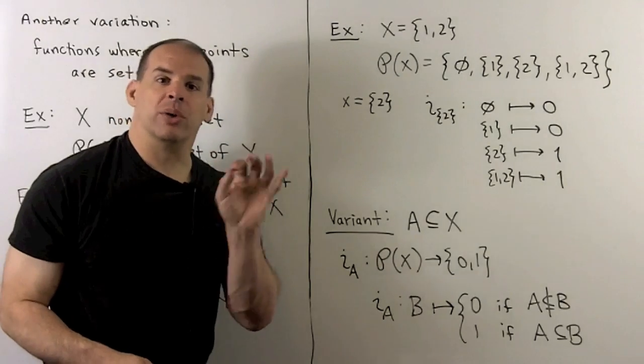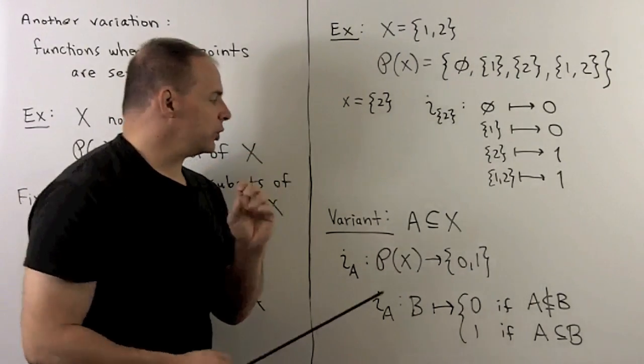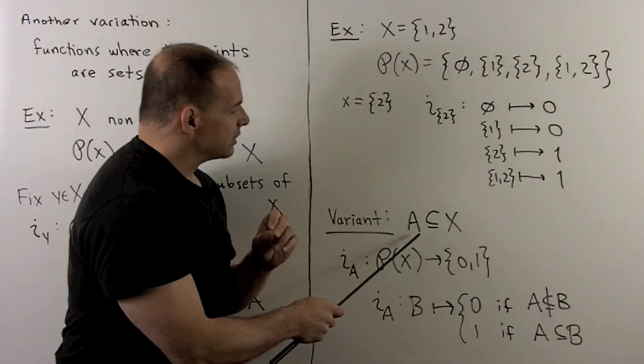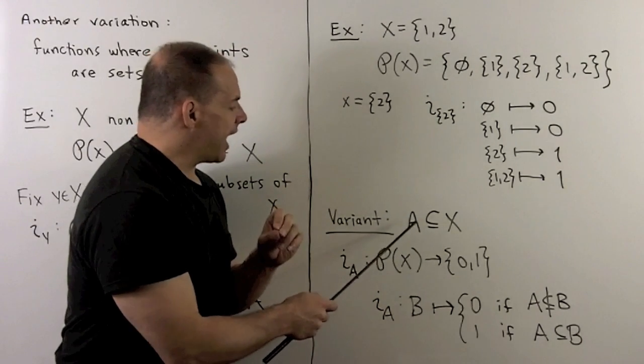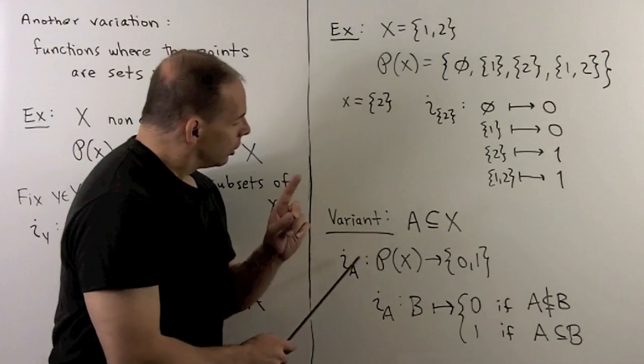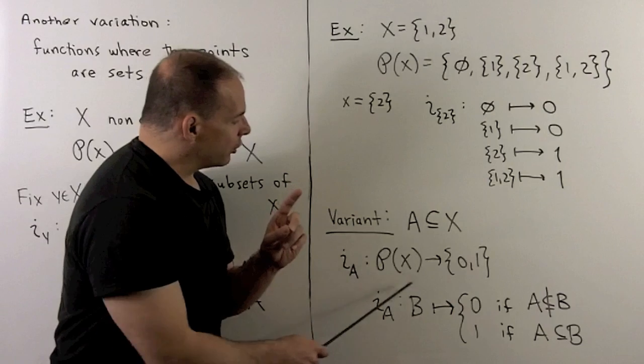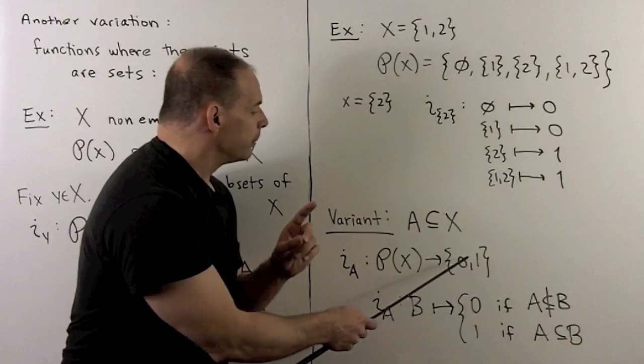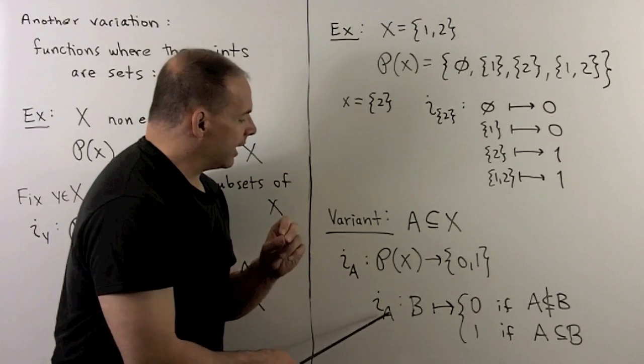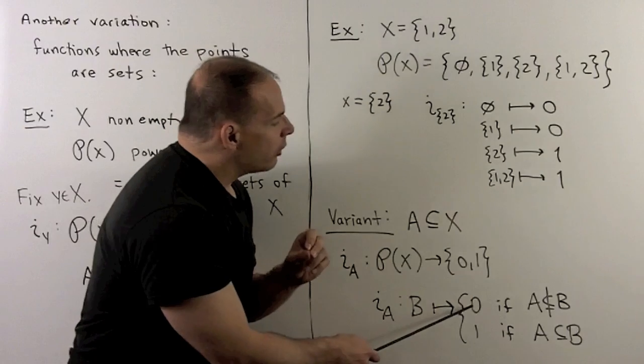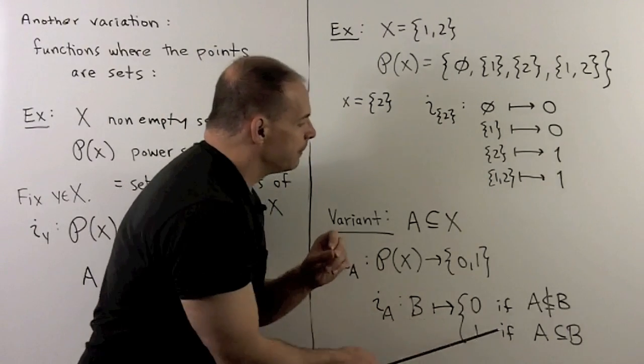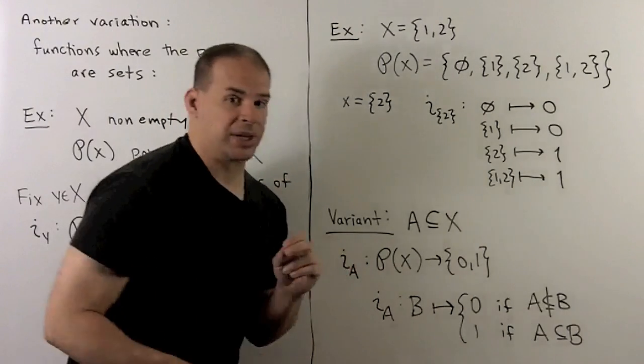We can, in turn, do a variant of that. Instead of using elements, we can just use other subsets. So, I'll fix subset A. We'll have i sub A, again, going from the power set to 0, 1. Then here, we just compare A and B. So, we'll get a 0 if A is not a subset of B, 1 if A is a subset of B.